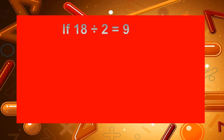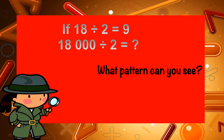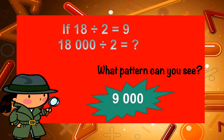Let's look at another one. If 18 divided by 2 is equal to 9, then what is 18,000 divided by 2? Can you see the pattern? Yes, our answer is 9,000. 18 divided by 2 is equal to 9, and there are three zeros in 18,000, which gives us 9,000.